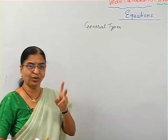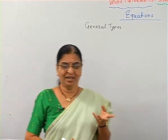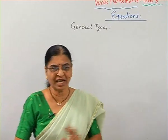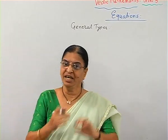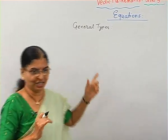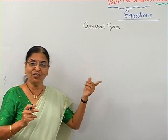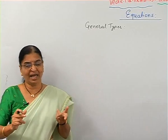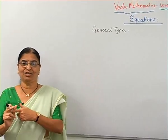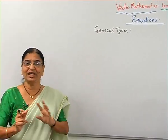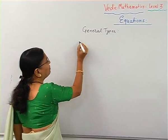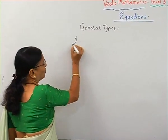We have already learned two types of equations: Ax plus B equal to C, and Ax plus D — that is a simple linear equation. Then we have learned Ax plus B equal to Ax plus C, or Ax plus D. Now it can be like that also.